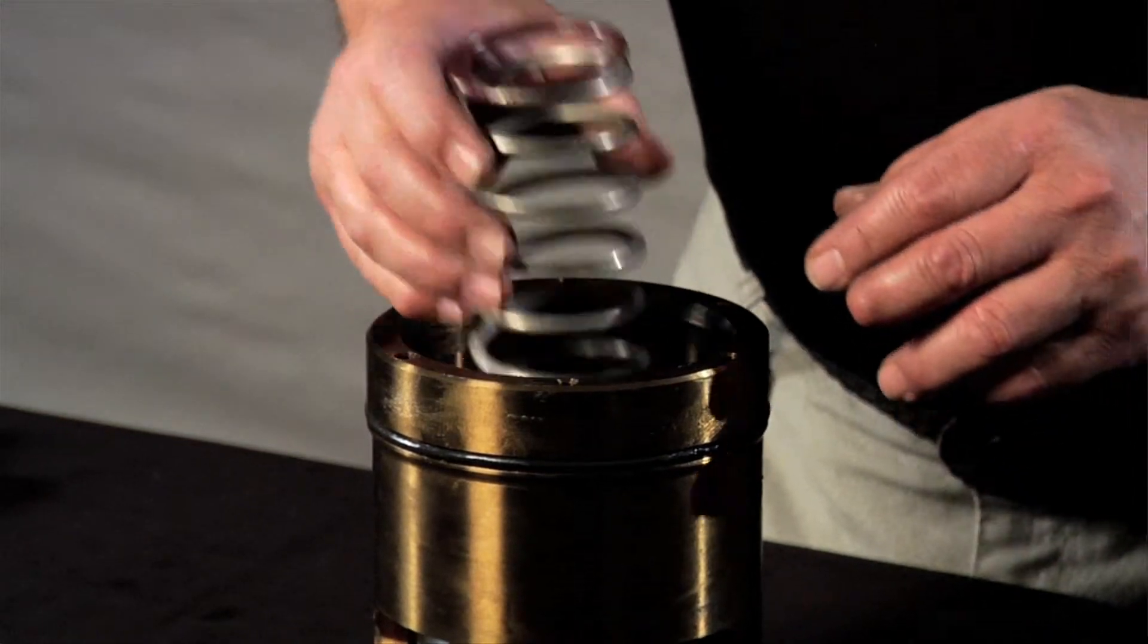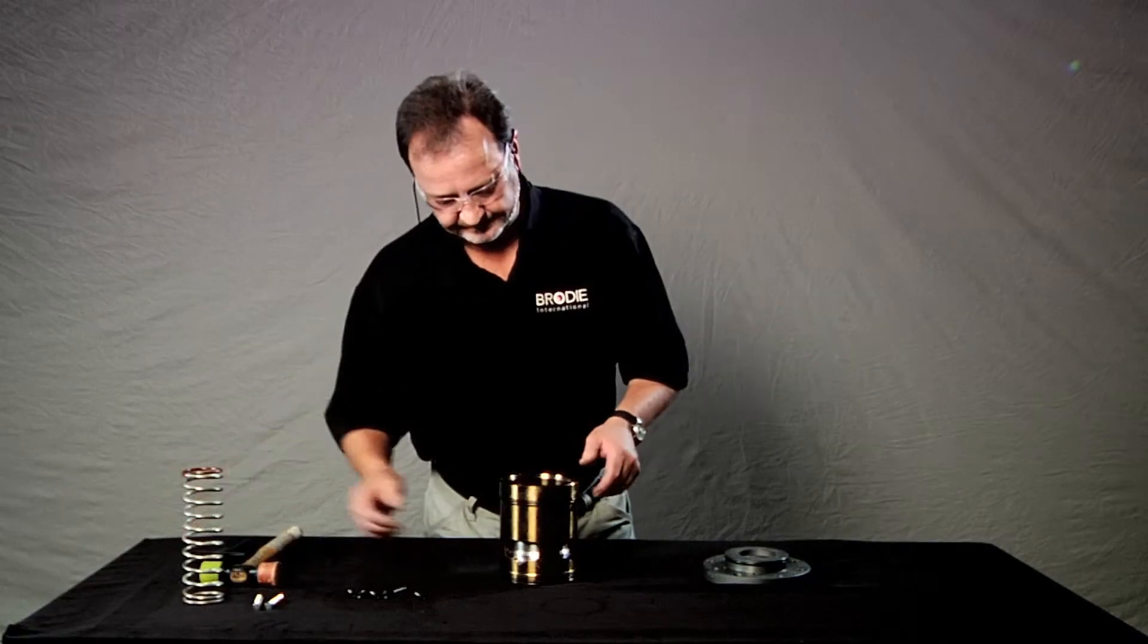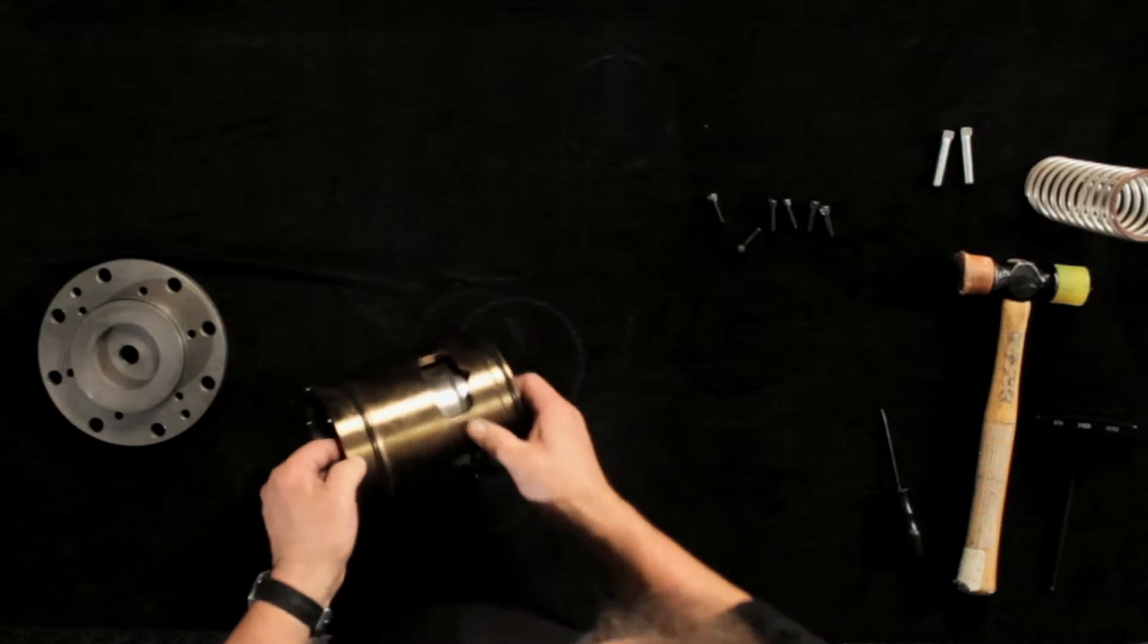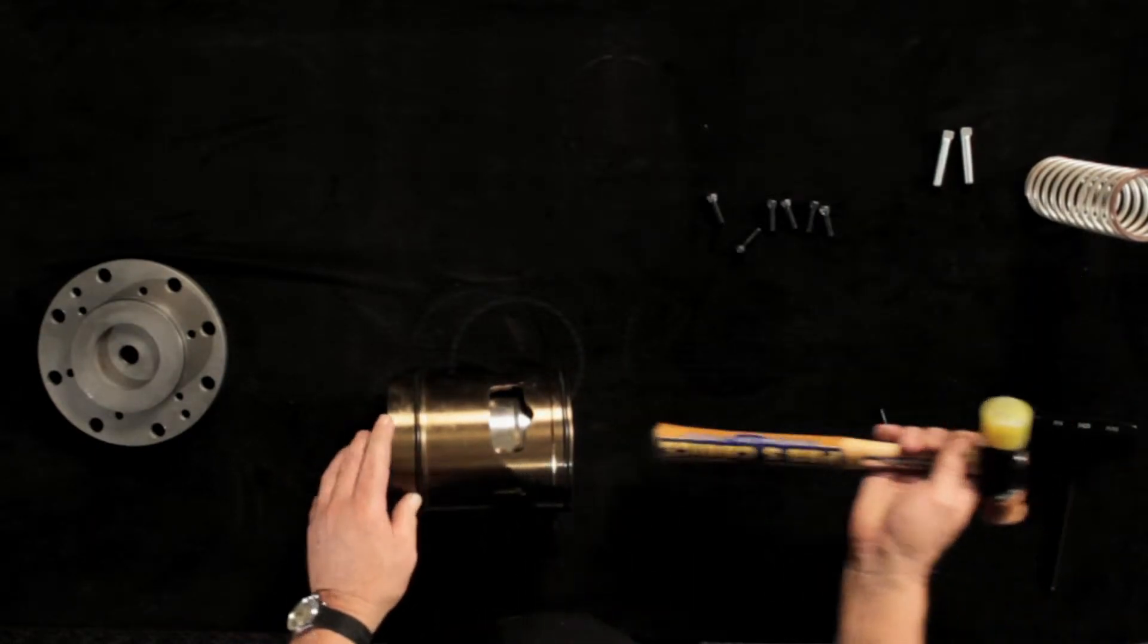Remove the valve spring. Remove the piston assembly. This might take a little help from the handle of a hammer since it's a tight fit.